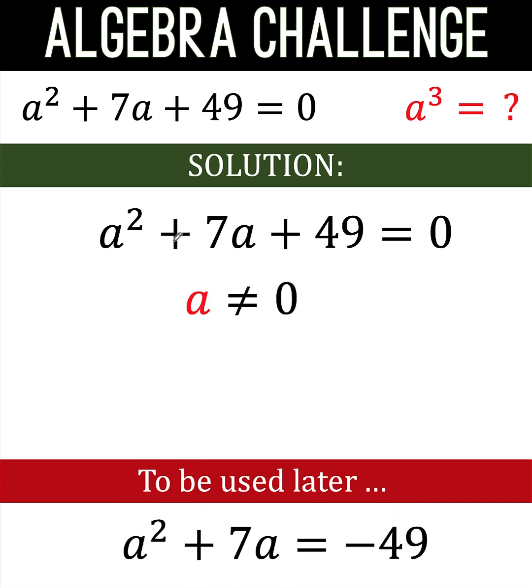Next, notice that in this given equation, a cannot be 0 because if a is 0, this part here would be 0, this part here would be 0, 49 is not equal to 0. So we know that a could not be 0 in this given equation.